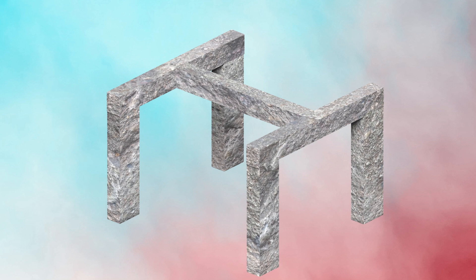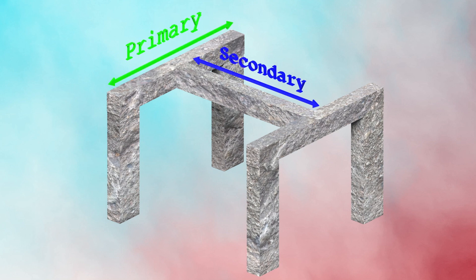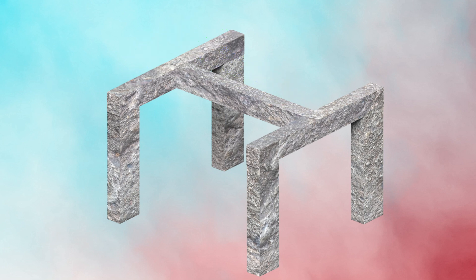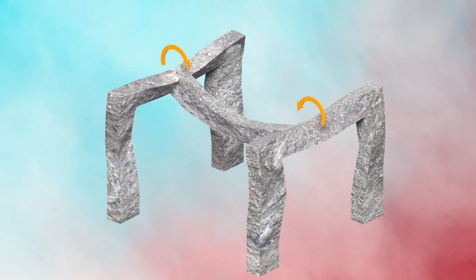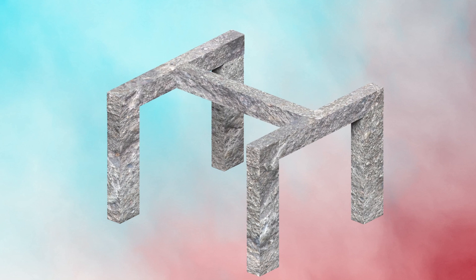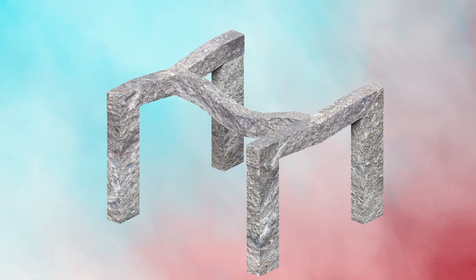In a 3D frame structure where secondary beams rest on primary beams, when secondary beams are not released, they cause torsion in the primary beams. Thus, they are released at supports to prevent any torsion in the primary beams.